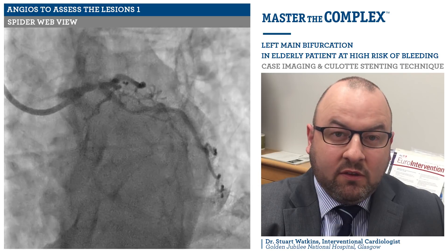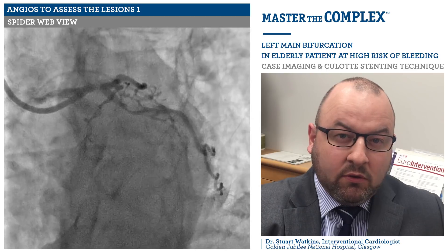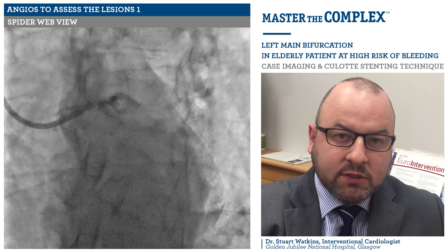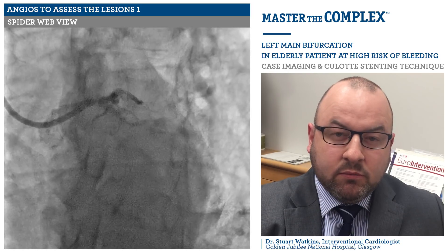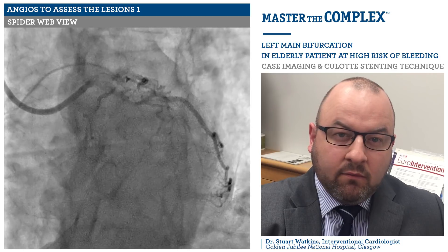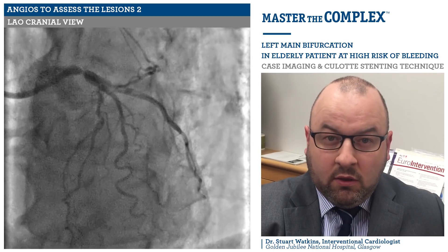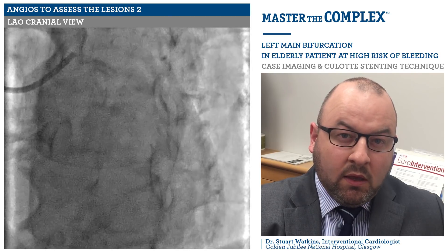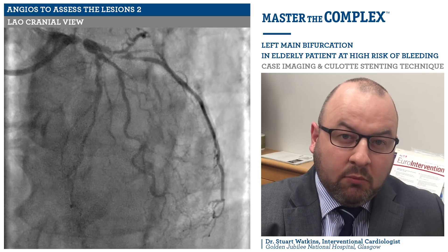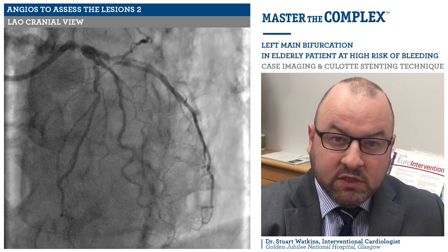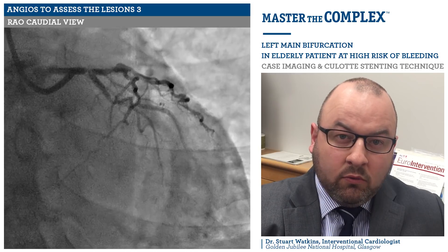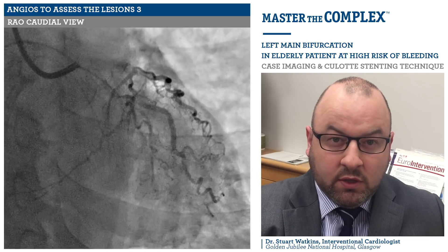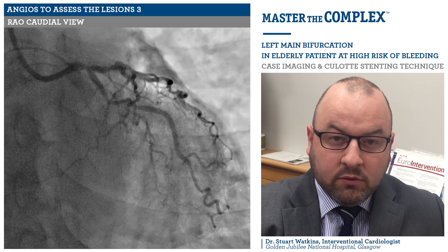This gentleman's angiogram was undertaken from the right radial approach. On the spider view you can see he has a tight distal calcified left main stem bifurcation stenosis, and he also has severe disease in the obtuse marginal branch of the left circumflex. On the LAO cranial view there is severe disease in the proximal LAD, with a large first diagonal branch which looks relatively free of disease. On the RAO caudal view you can see that the distal left main stem bifurcation stenosis is truly a Medina 1,1,1 stenosis.